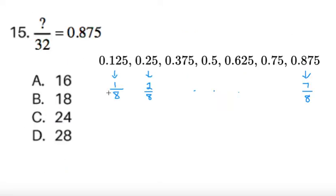For problem 15, note you're given question mark over 32 equals 0.875. You can try to memorize that 0.125 is 1/8, 0.25 is 2/8, and so on. Then 0.875 is equal to 7/8. We just have to solve question mark over 32 equals 7 over 8. This is simple algebra. The question mark here must be 28, giving us answer D.